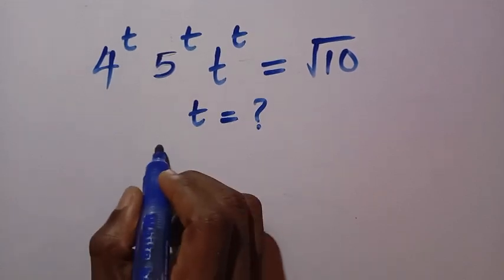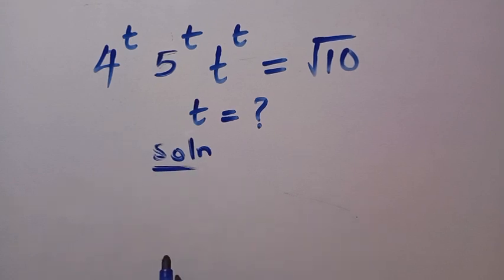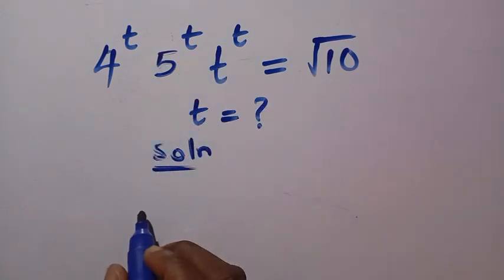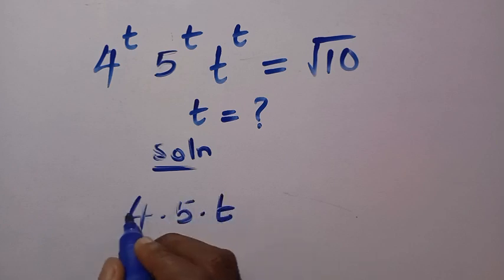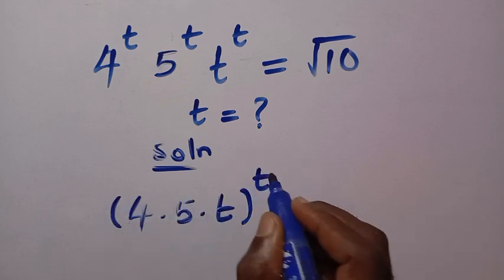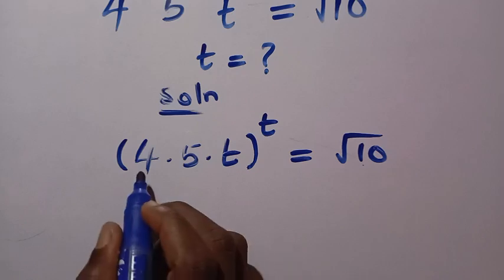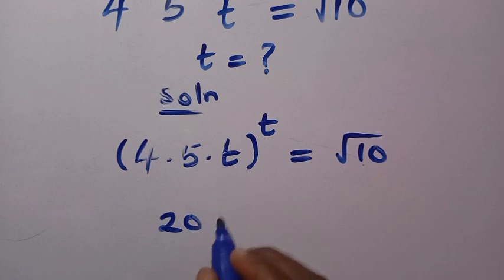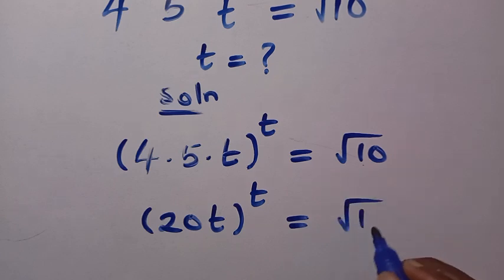Let me consider the solution from here. We'll apply the rule for different bases with the same power — we multiply all the bases together and take just one power. So this becomes 4 multiplied by 5 multiplied by t, all raised to the power of t, equals the square root of 10. Multiplying 4 by 5 gives 20, so we have 20t all raised to the power of t equals the square root of 10.